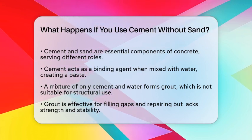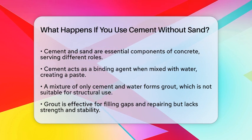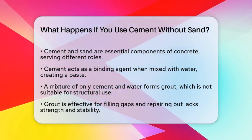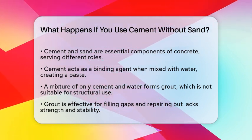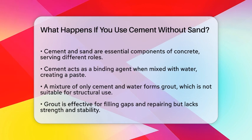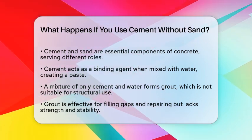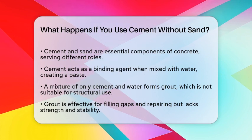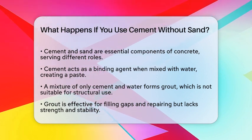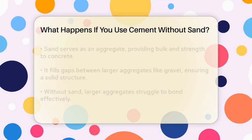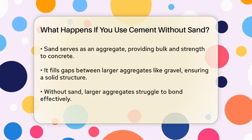Cement is essentially a glue that binds everything together. When you mix cement with water, it forms a paste. However, this paste alone isn't enough to create strong concrete. When you only use cement and water, you end up with a mixture known as grout. Grout is great for filling small gaps and repairing concrete, but it's not suitable for building structures because it lacks the strength and stability needed.